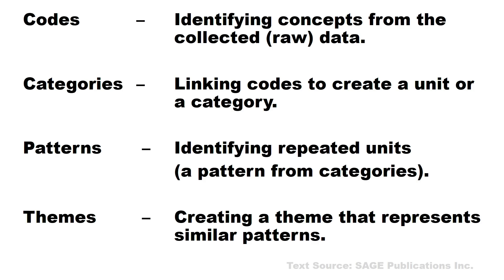The basic elements of qualitative data analysis would be about codes, categories, patterns, and themes. When we say codes, we are actually identifying concepts from the collected raw data. You will understand more what that means as we go along with the examples about coding.